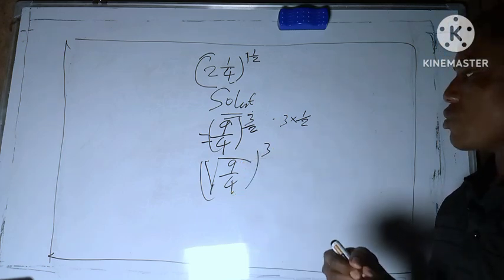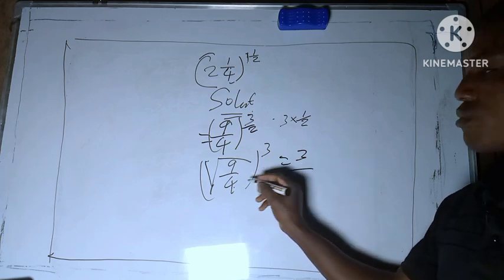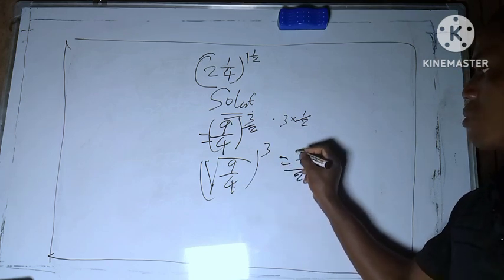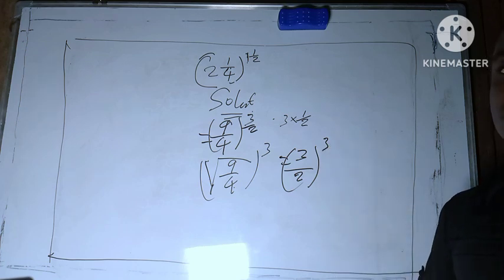Square root of 9 is what? To give you 3, all over square root of 4 is 2, raised to power 3.